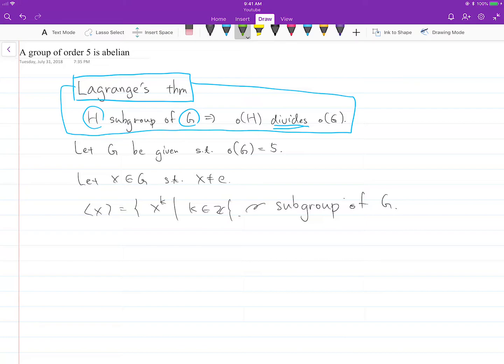Now we can use Lagrange's theorem because this is a subgroup of G. So by Lagrange's theorem, the order of this cyclic group divides the order of G, which is 5.